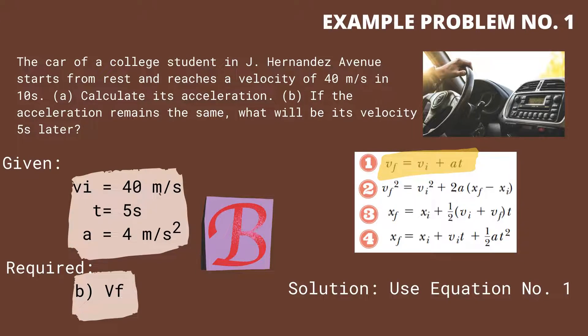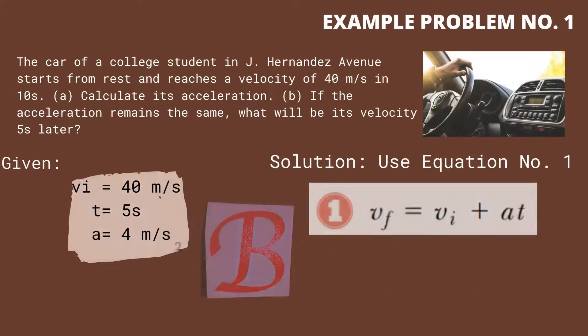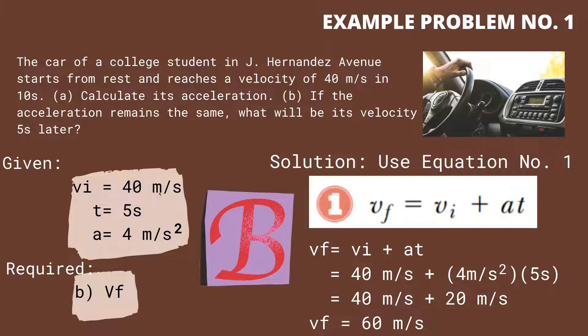We will use equation number 1 and substitute all the values. v sub f equals v sub i plus a multiplied by t.